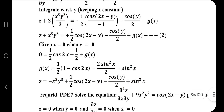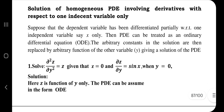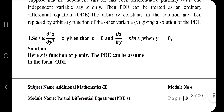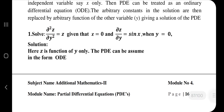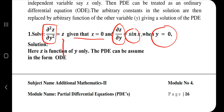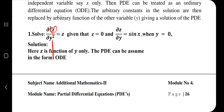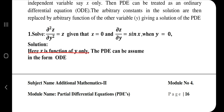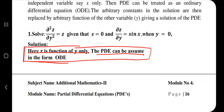The last topic is solution of homogeneous PDE involving derivatives with respect to one independent variable only. The question is: solve d²z/dy² = z, given z = 0 and dz/dy = sin x when y = 0. The first thing to check is whether z is a function of only one variable. If both x and y appear, this approach doesn't apply. Only proceed if z depends on y (or x) alone in the denominator.